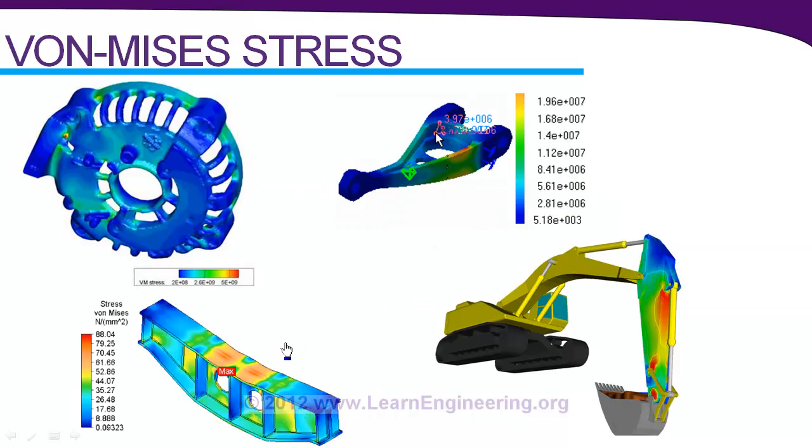Look at these diagrams. These are simulation results of some mechanical or structural design components. The engineer who is in charge of design of these components will determine whether this component will be able to withstand a given load by checking a stress called Von Mises stress.